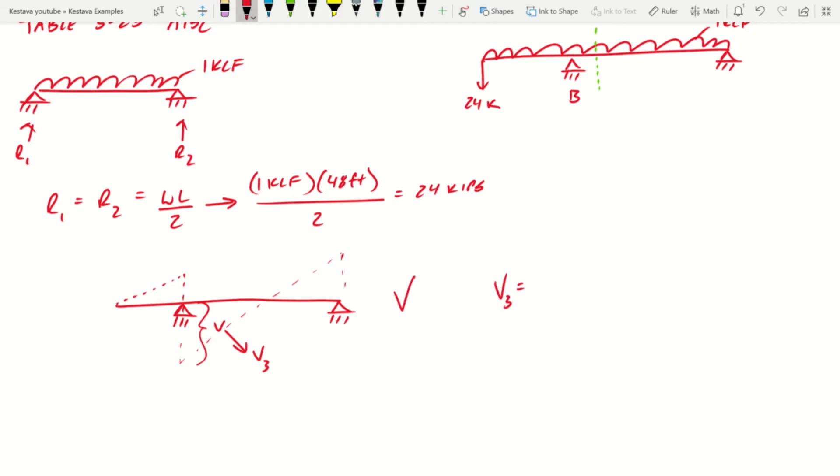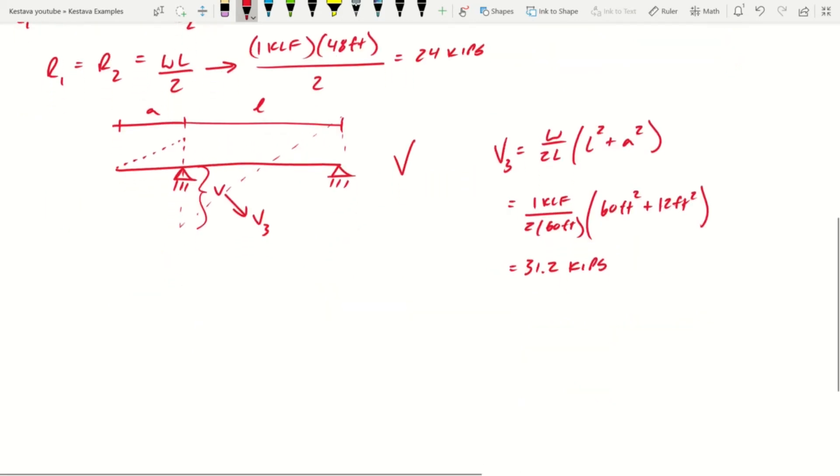So if we go to the equation for V3, we'll see that it equals A being the cantilever, L being the prop, W being our distributed load. So let's plug in. We get the following. And that gets us 31.2 kips. So we're going to hang on to that value until later.